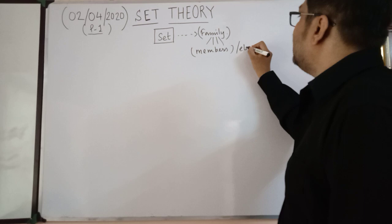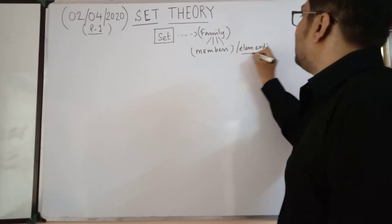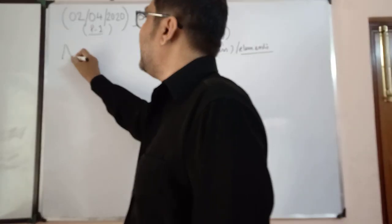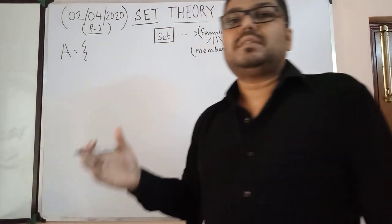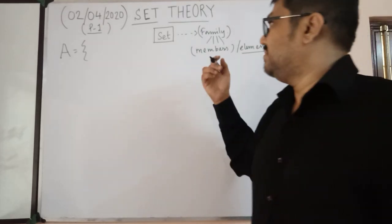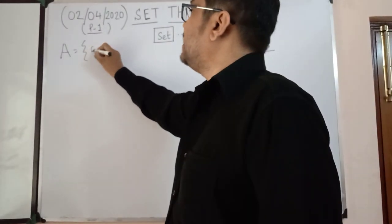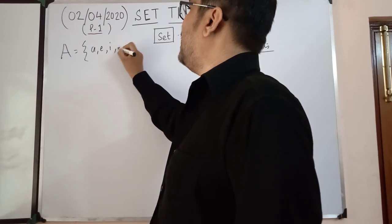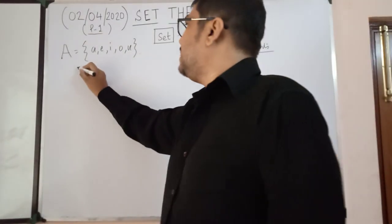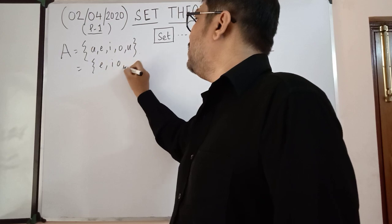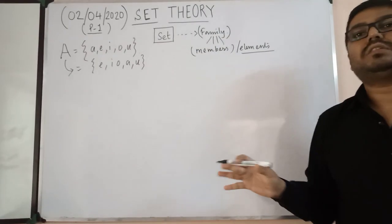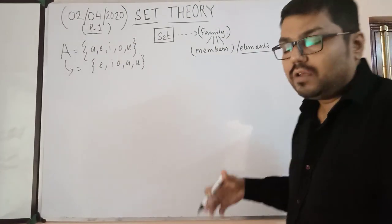We denote a set by capital letters. Say A is a set of vowels in the English language — we can write A = {a, e, i, o, u}. We can also write it in any order, like {e, i, o, a, u} — it's the same set. If you change or randomize the order, it is not a different set; we call it the same set.